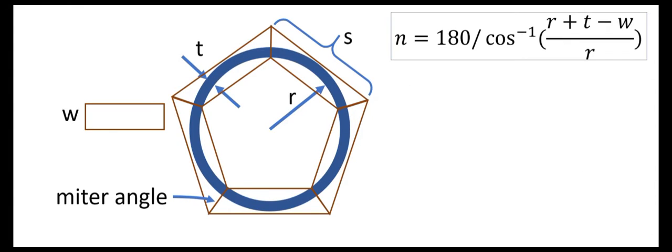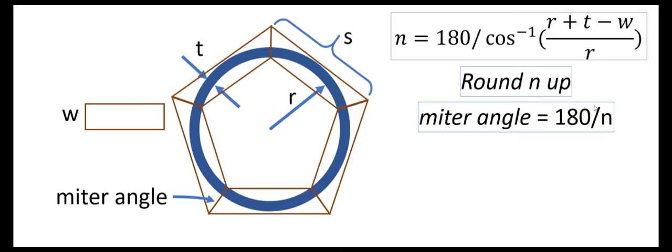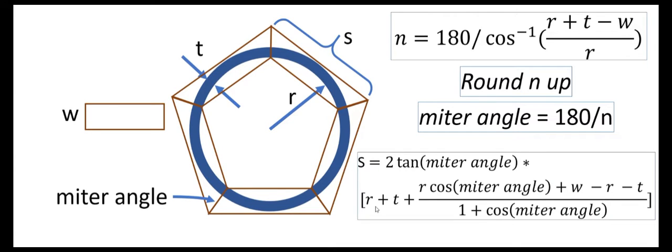So just to recap, first you calculate the number of sides that you're going to need according to this formula. It's going to be some decimal, and you're going to round that up to the next highest whole number. At that point, you can calculate the miter angle just by dividing 180 by the number of sides. And then finally you need the side length, which is given again by this formula.